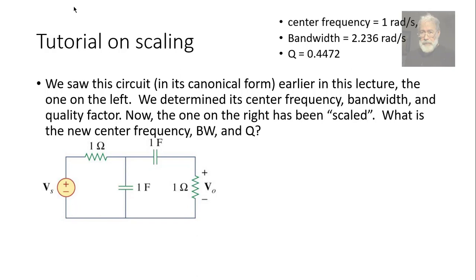Now, on the right, we have the same circuit once it has been scaled. What is the new center frequency? What is the new bandwidth? And what is the new q, the quality factor? Well, km is immediate. You say, hey, I go from 1 ohm to 2 kilo ohms. Km is 2000.